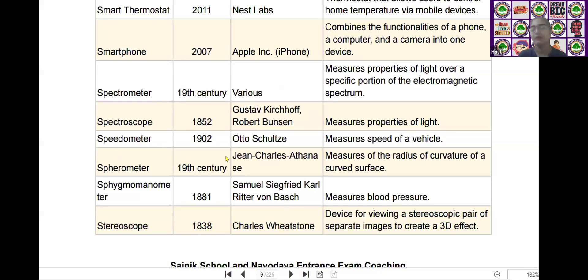The next scientific device is the speedometer. Speedometer was invented by Otto Schulze in the year of 1902. It measures the speed of a vehicle.